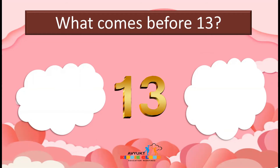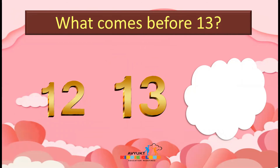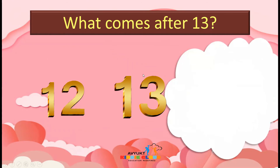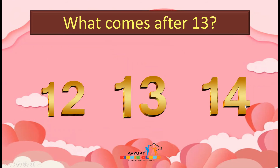What comes before 13? What was the number which we have learned before 13? 1, 2 — what do we say that as? 1, 2 will become 12. So the number that comes before 13 is 12. Now what number comes after 13? The number that comes after 13 is 1, 4 — 14. The number that comes after 13 is number 14.